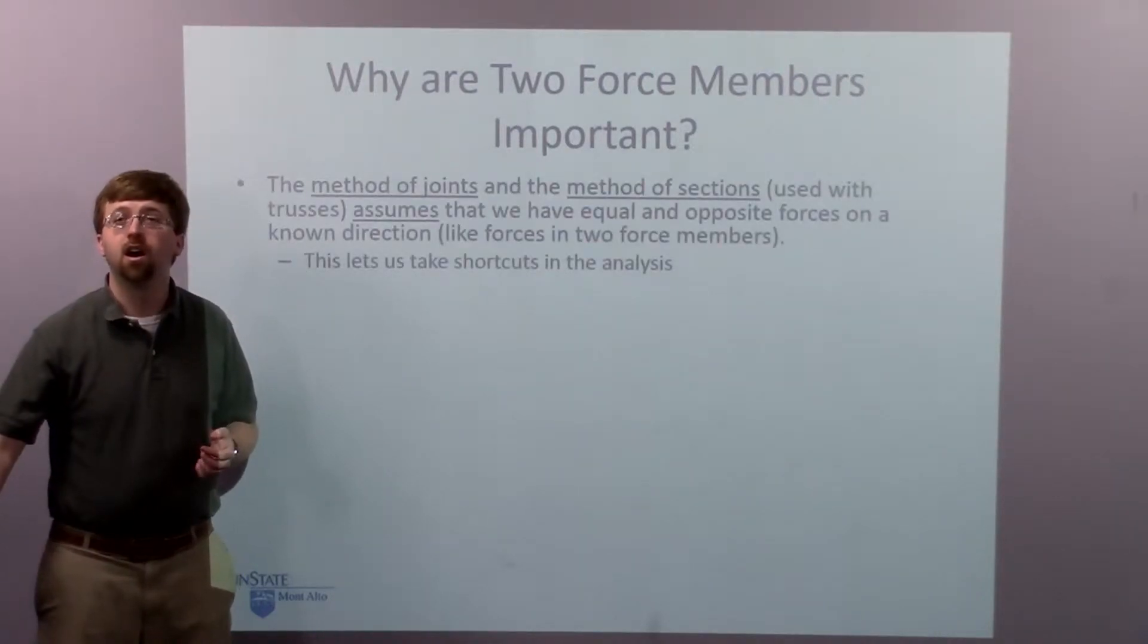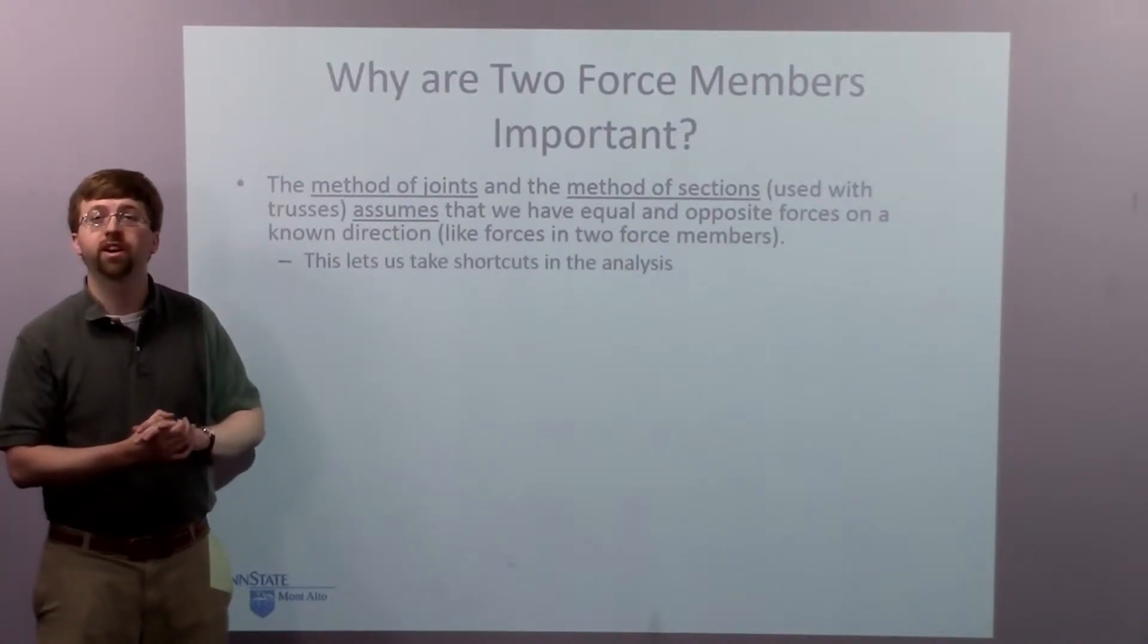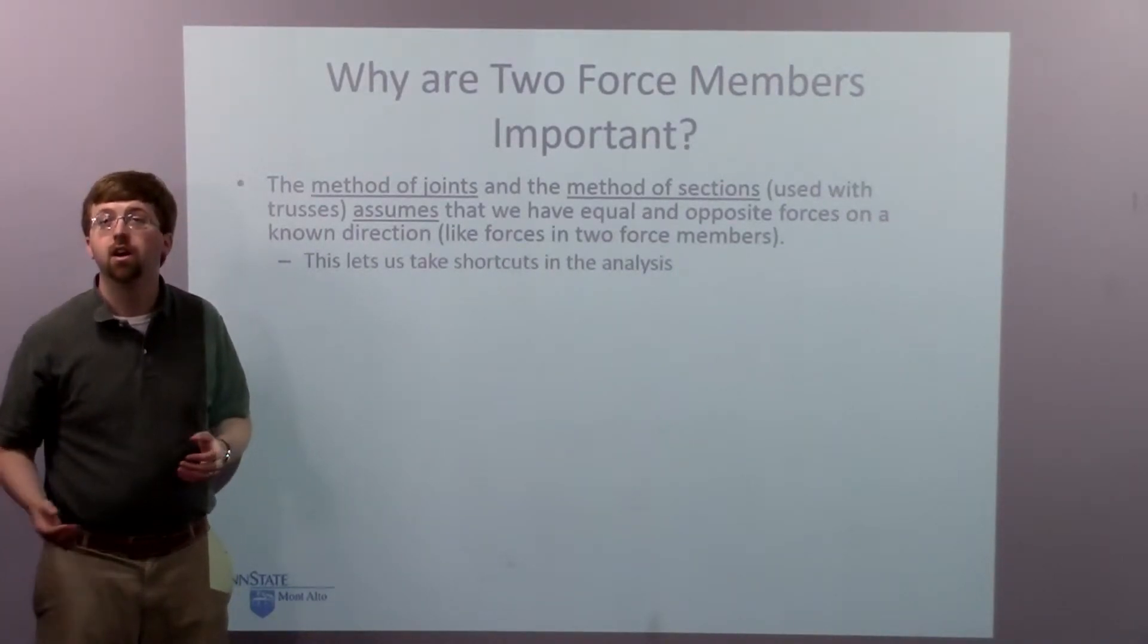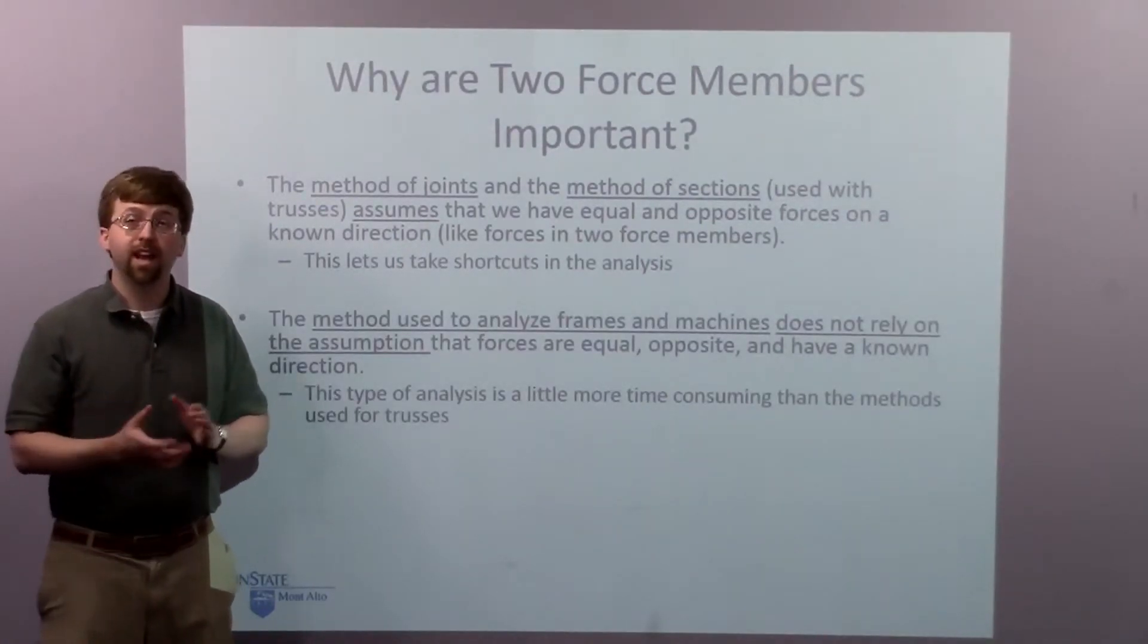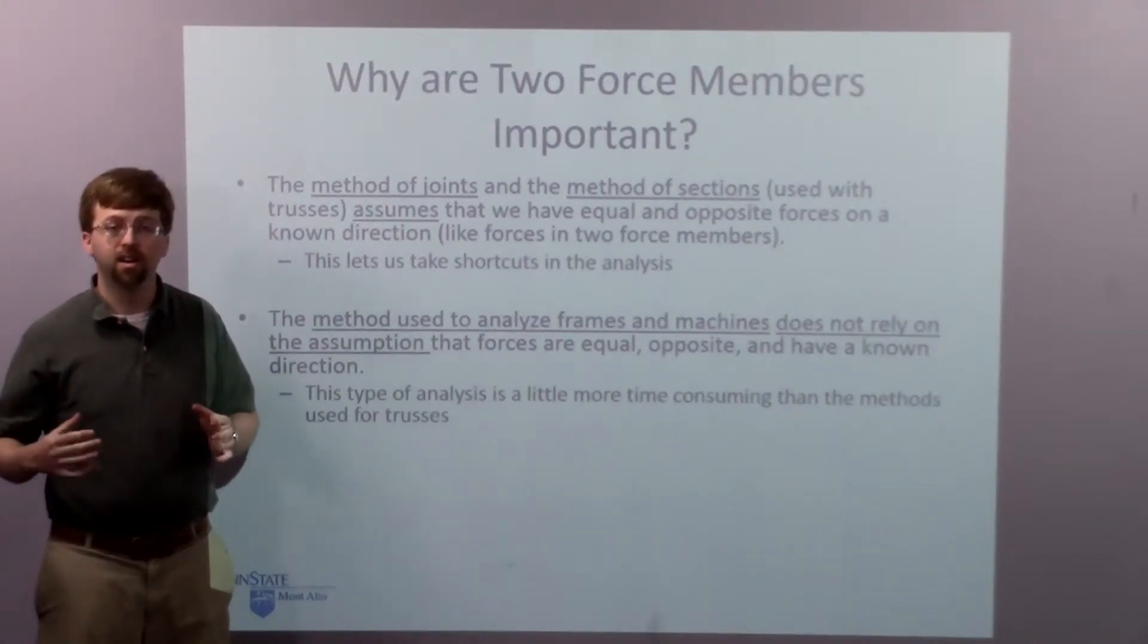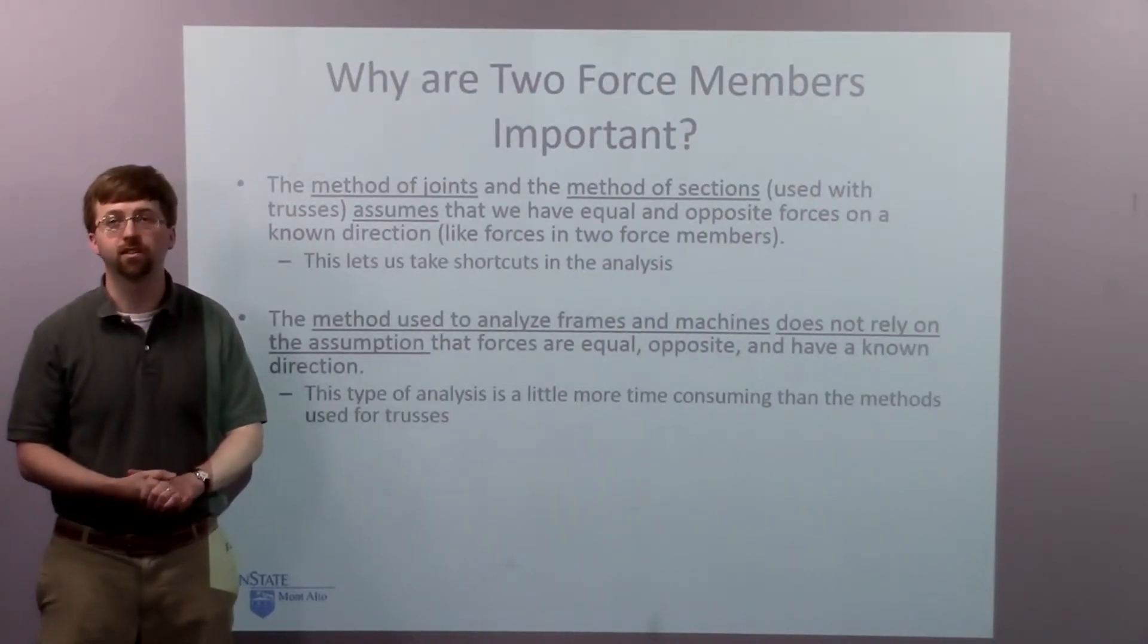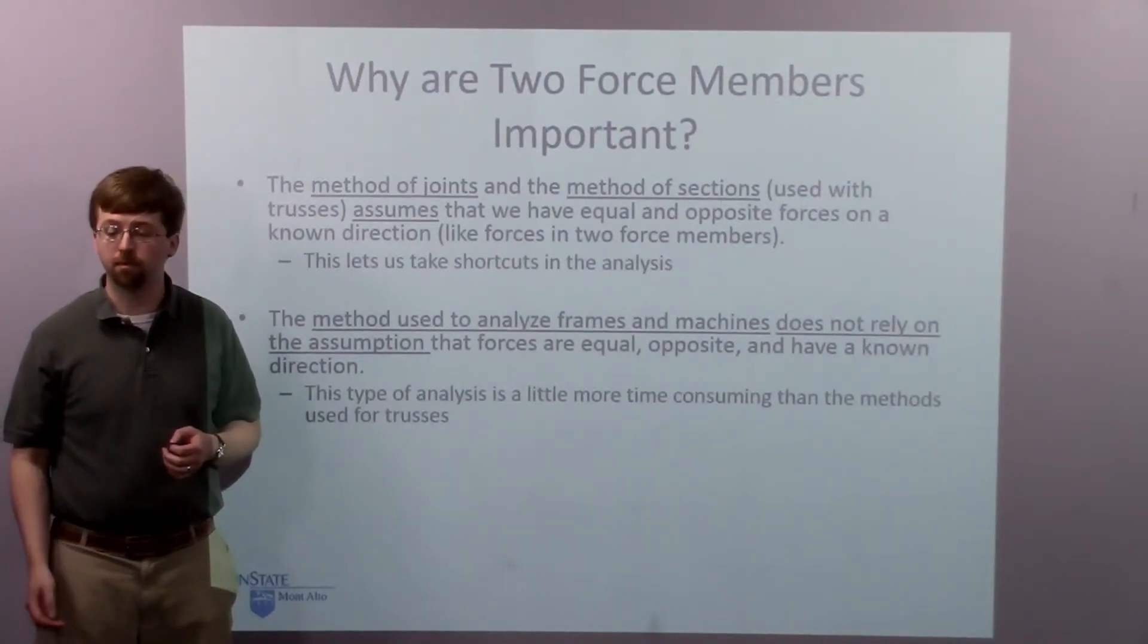Why are two force members important? The method of joints and the method of sections, if we're analyzing trusses, we're going to assume that we have two force members. If I don't have that assumption, then the method of joints and method of sections don't work. It lets us take shortcuts in analysis. The method used to analyze frames and machines does not rely on this assumption. That's why, with frames and machines where we don't have all two force members, we can use that method. But this method is a lot more time-consuming than the method of joints or method of sections. So, we only use it when we really can't make that two force member assumption.